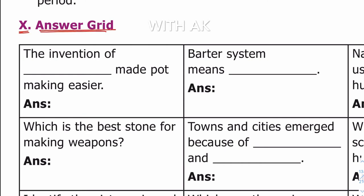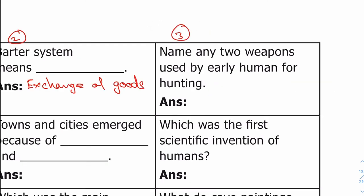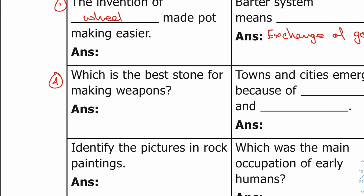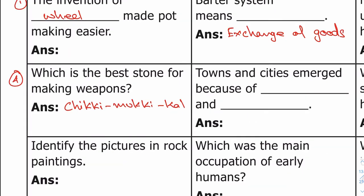Tenth exercise: answer grid. First question: the invention of dash made pot making easier — wheel. Second question: barter system means exchange of goods. Third question: name any two weapons used by early humans for hunting — stones and axe, bow and arrow. Fourth question: which is the best stone for making weapons — flint. Fifth question: towns and cities emerged because of dash and dash — trade and commerce.